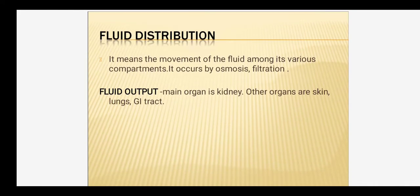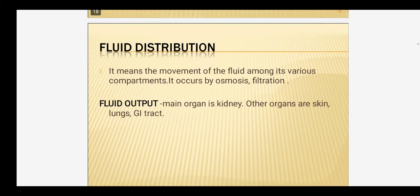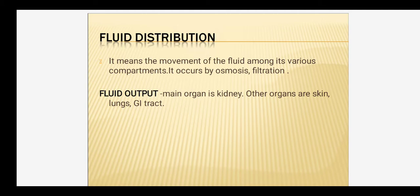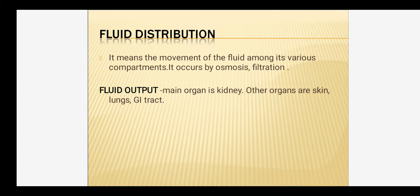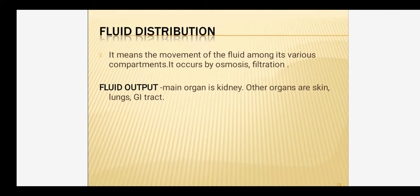The second factor is fluid distribution — movement of fluid among its various compartments — which occurs by osmosis and filtration. When distribution is not proper or fluid is trapped, such as in large edema, peritoneal cavity, pleural cavity, or interstitial space, the intake-output balance is disturbed. Then, fluid output: the main route is the kidney, with others being skin, lungs, and the GI tract.